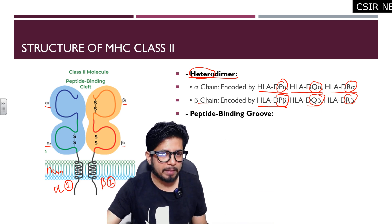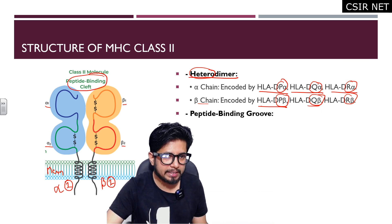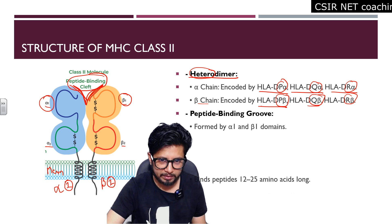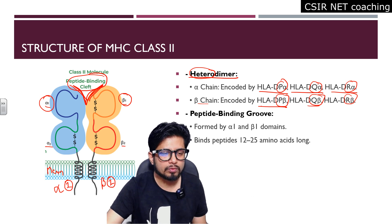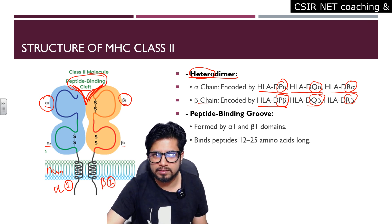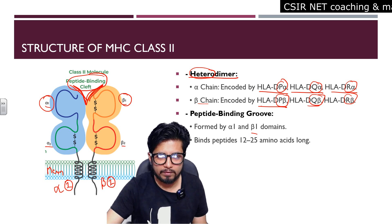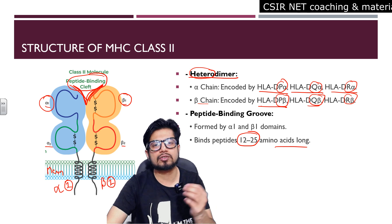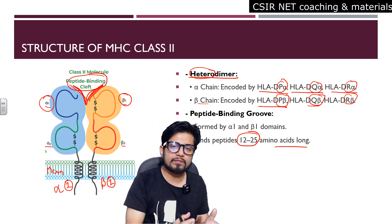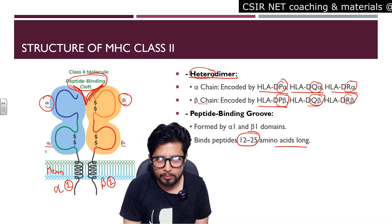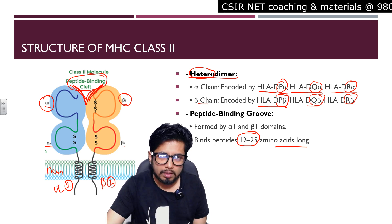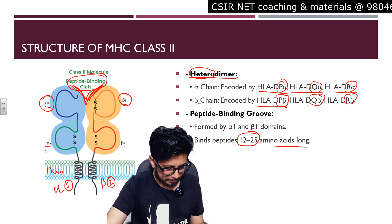Next is the peptide binding groove — this is the peptide binding cleft or groove between alpha 1 and beta 1. It binds to a longer peptide, that is 12 to 25 amino acids long. MHC class 2 can bind 12 to 25 amino acid long peptides, while MHC class 1 binds 8 to 12 amino acid long peptides.